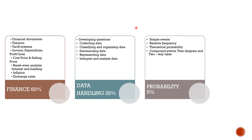Under Data Handling, the topics are: developing questions, collecting data, classifying and organizing data, summarizing data, representing data, and interpreting and analyzing data. Under Probability, we will look at simple events, relative frequency, theoretical probability, and compound events made up of tree diagrams and two-way tables.